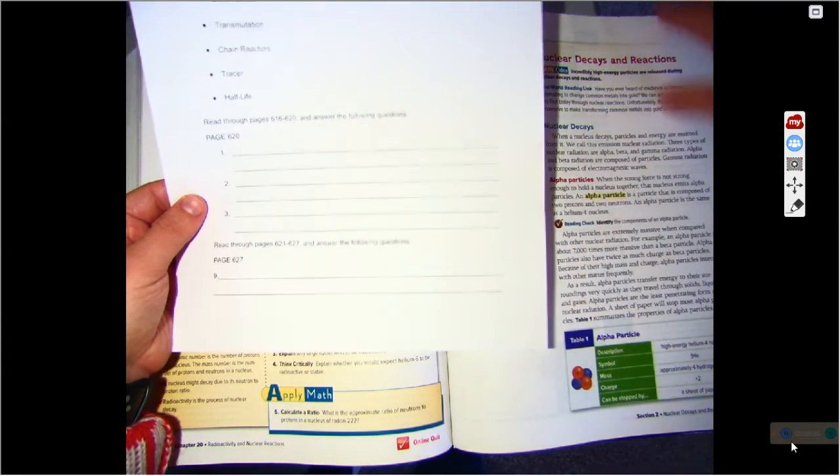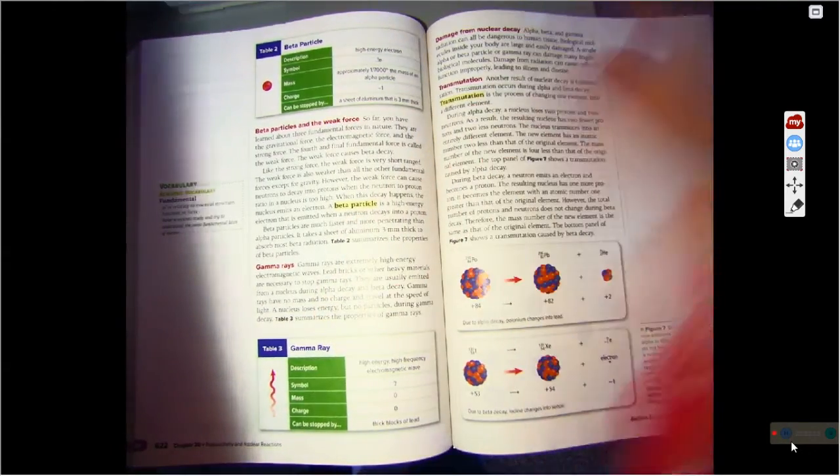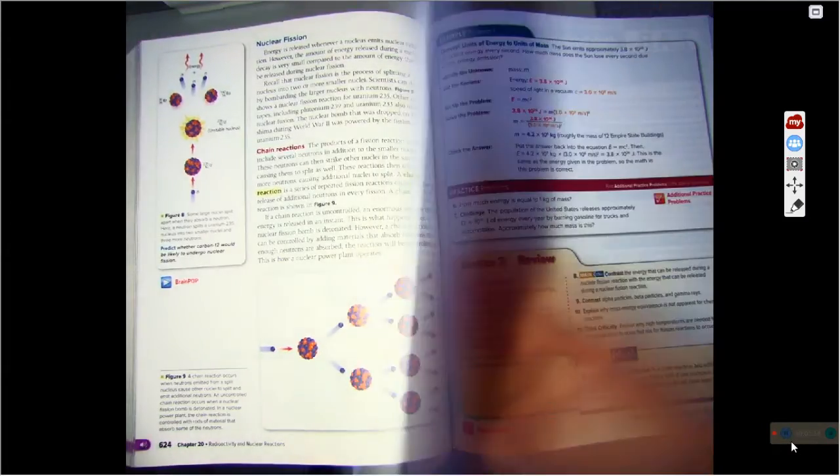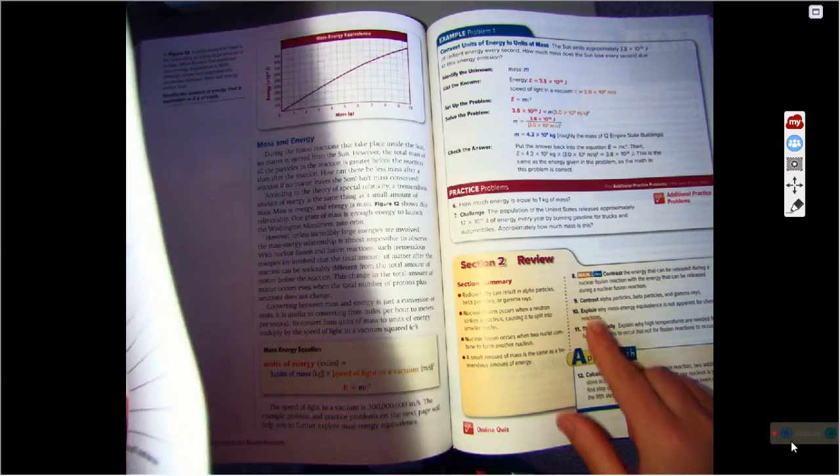So now it says read through the next section, page 621 through 627. And notice, here's more of your words. So 621 through 627. When I get to 627, I've got some more questions here.